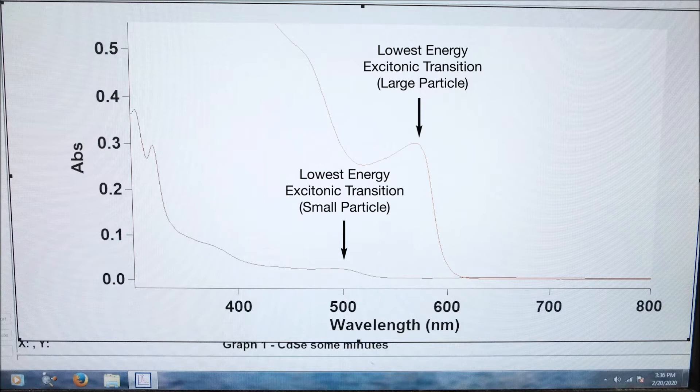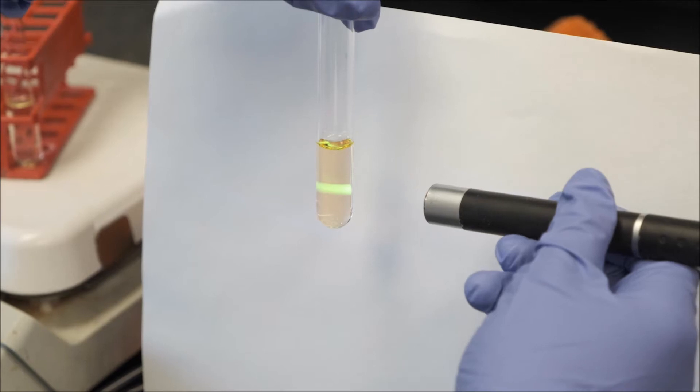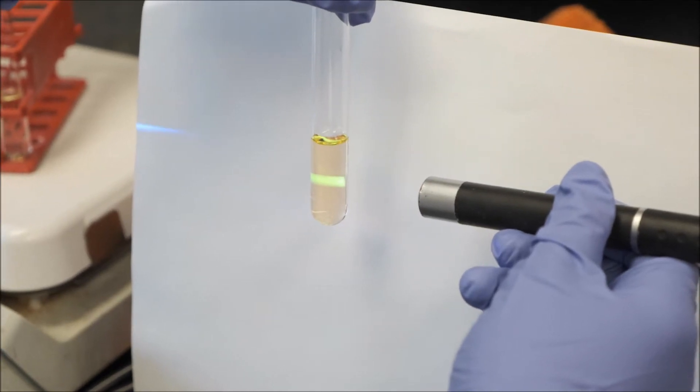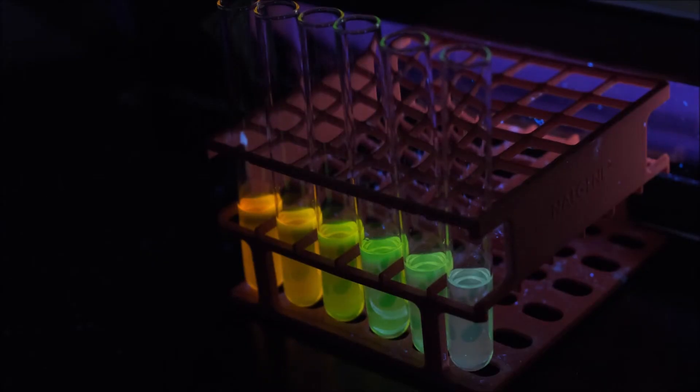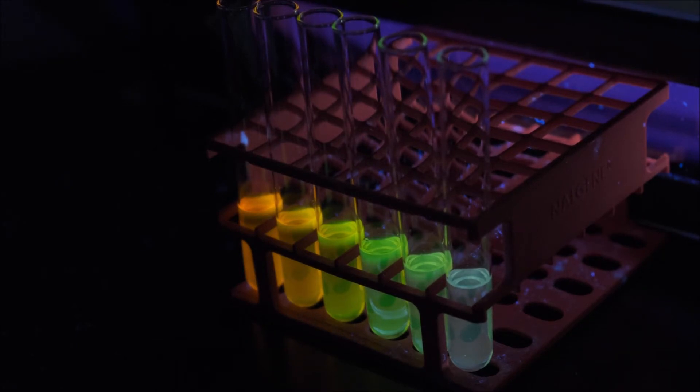More accurate size measurements can be done via transmission electron microscopy. These particles are also naturally luminescent, so their emissive features vary as a function of size. The smallest particles emit in the blue and the largest in the red.